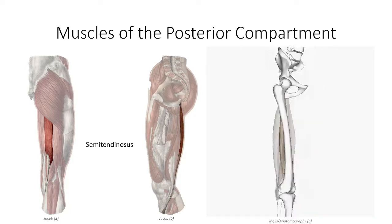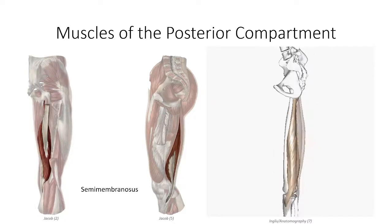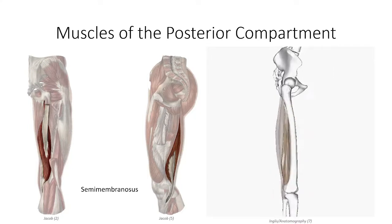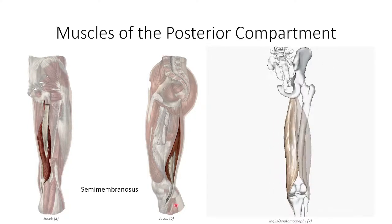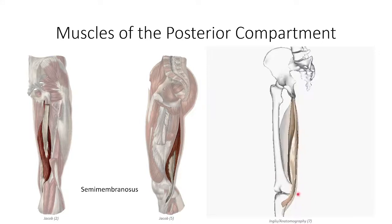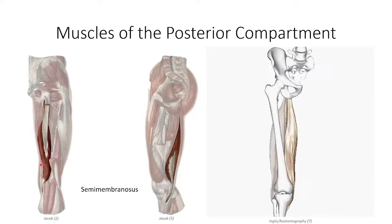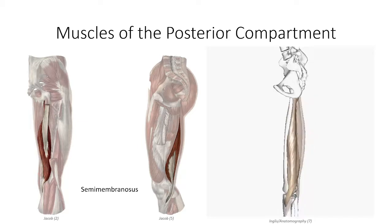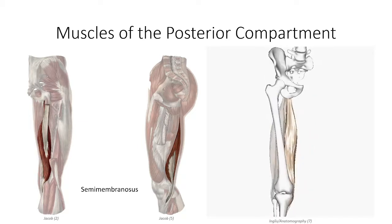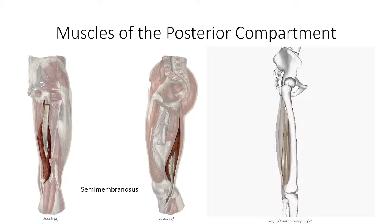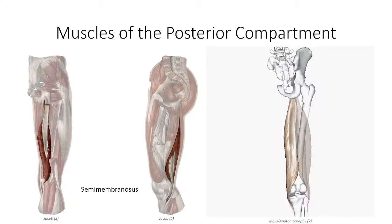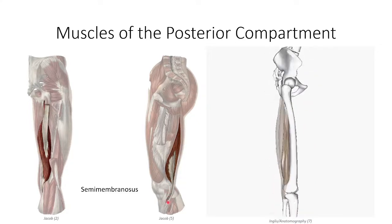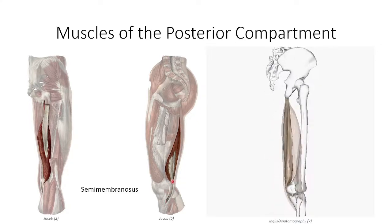Deep to the semitendinosus is the semimembranosus muscle. Its name is the result of its larger and more distinct tendon, which lies both medial and lateral to the tendon for semitendinosus. Both of these tendons can be palpated on the medial side of the knee, particularly when the muscles are actively contracting. The semimembranosus projects deep to the semitendinosus to insert inferior to the medial condyle of the tibia.